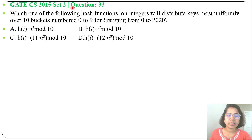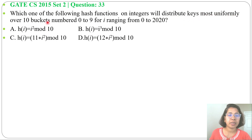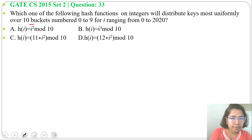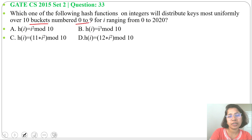Let's solve a previous question on Hashing. This question was asked in GATE CH 2015 Set 2, Question Number 33: which one of the following hash functions on integers will distribute keys most uniformly over 10 buckets numbered 0 to 9, for i ranging from 0 to 2020? Here, buckets means slots — we have 10 slots ranging from 0 to 9.